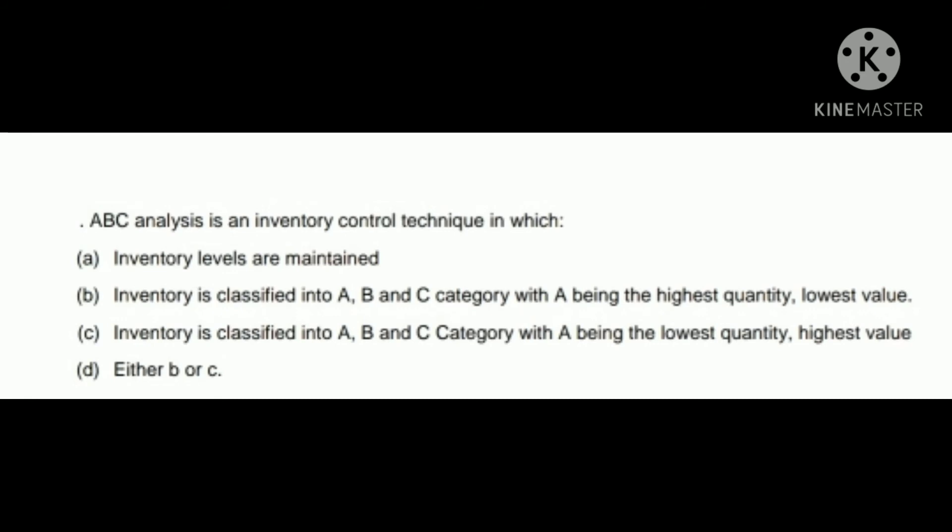Next question: ABC analysis is an inventory control technique in which — A) inventory levels are maintained, B) inventory is classified into A, B, and C with A being highest quantity/lowest value, C) inventory is classified into A, B, and C with A being lowest quantity/highest value, D) either B or C. Correct answer is C: A category = lowest quantity, highest value. A lecture on ABC analysis is also linked in the description box.